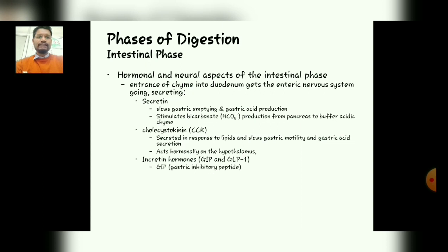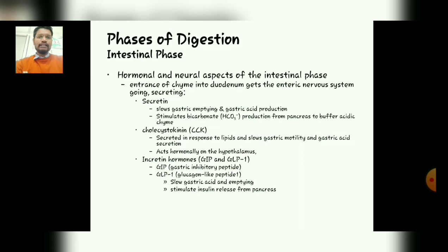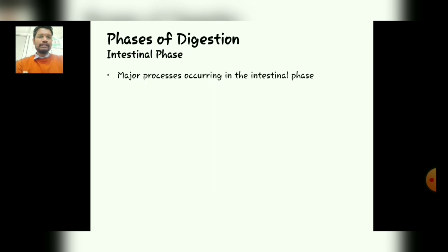GIP stands for gastric inhibitory peptide and GLP-1 stands for glucagon-like peptide 1. Both help in slowing gastric acid secretion and gastric emptying, and they also stimulate insulin release from the pancreas.